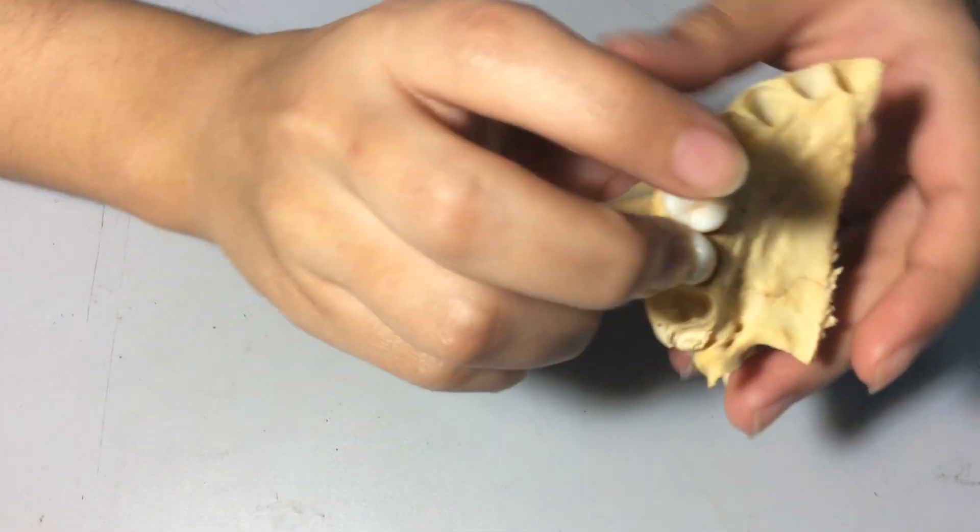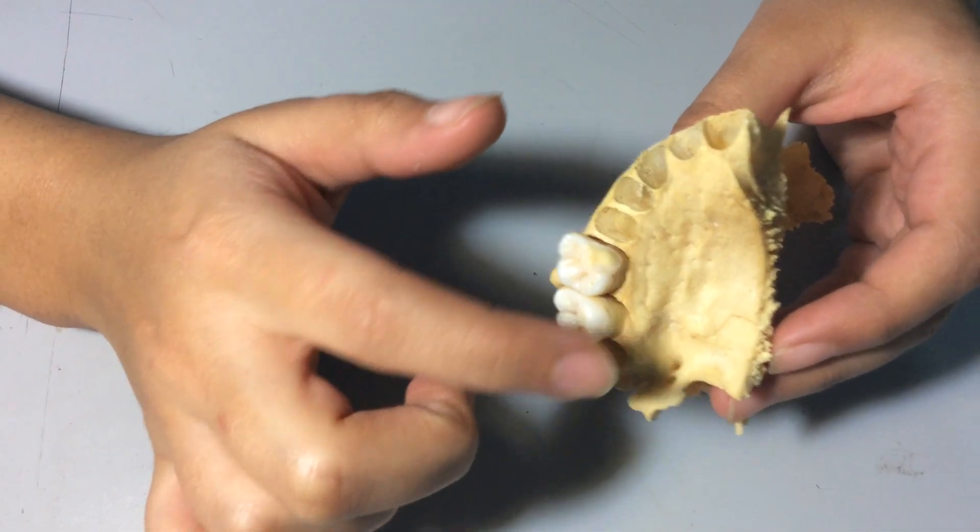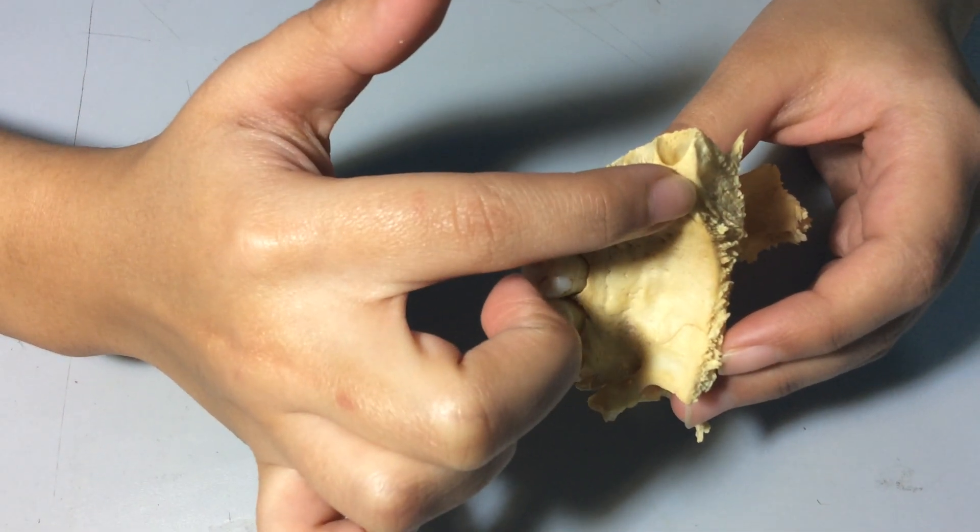Coming to the inferior surface of the palatine process, we have irregular pits for the palatine glands, greater palatine foramen, and incisive canal.